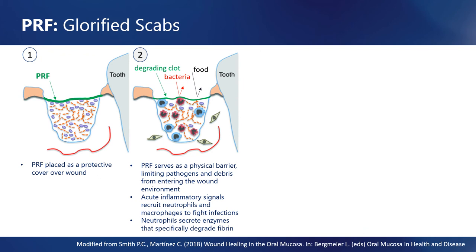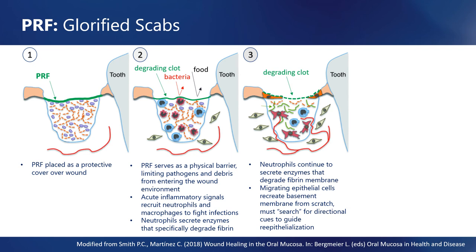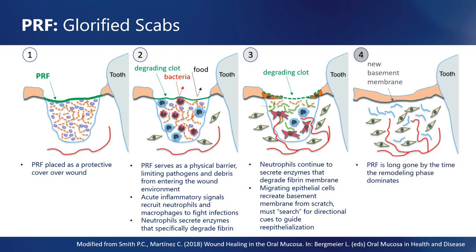So, how would PRF be expected to perform in a wound healing environment? Compressed into membranes, PRF can be placed over wounds as a protective cover to limit pathogens and debris from entering the wound. The acute inflammatory signals released from platelets during clot formation will act to recruit neutrophils and macrophages to fight infections and initiate subsequent wound healing mechanisms. As first responders to the inflammatory signals released by platelets, neutrophils secrete enzymes that specifically degrade fibrin, allowing them to access the wound and fight infections. Neutrophils arriving at the PRF membrane will begin to degrade it, which likely explains why these membranes are thought to have short residency times within wounds. As migrating and proliferating epithelial cells begin to close the wound, they must recreate the basement membrane from scratch — an energy-intensive process that will limit the rate of re-epithelialization. By the time the wound reaches the remodeling phase, the PRF will be long gone.